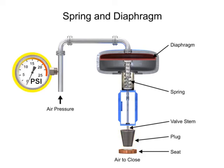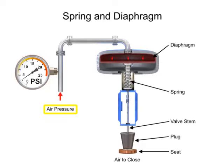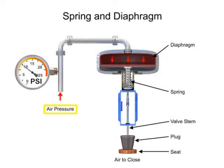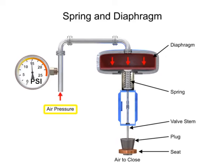A 15 PSI pneumatic signal enters the housing at the top of the actuator. As pressure is exerted on the diaphragm, a downward force is applied against the spring which moves the restrictor. The diaphragm moves until it creates an equal but opposing force against the spring, at which time the motion stops as the plug meets the valve seat.